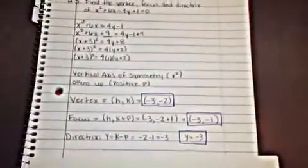And our directrix equals y equals p minus 4, which gives us y equals 3. Oh, I'm sorry, k minus p, which gives us y equals 3. And we are done!